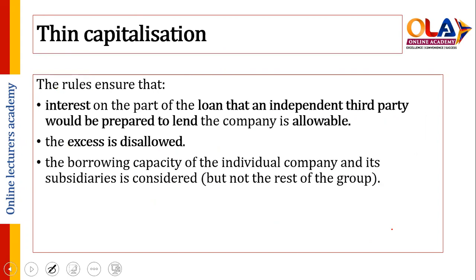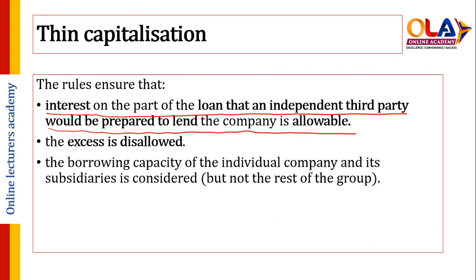The thin capitalization rule ensures that interest on the part of the loan that an independent third party would be prepared to lend is allowable. So if you are getting a 70, 80, or 90 percent loan, but an independent party would only lend a maximum of 50 or 40 percent, the tax authority will treat your position as if you had an independent loan — and any interest on the excess is disallowed.